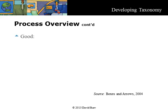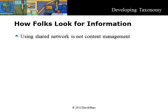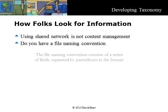Boxes and Arrows also says that most corporate taxonomy development projects begin at the wrong end of the information life cycle. Instead of tackling the problem at its source — content creation — the effort is invested in classifying documents in an existing repository with all its warts. The result is classified mush. Many organizations are drowning in files because they try to use the shared network as a quasi-content management system. You can quickly find out if this is the case by asking if they have a file naming convention. A file naming convention embeds metadata in the file name so you know what it is. If they have a file naming convention, they don't have a content management system — or maybe they do and they still keep the file naming convention. This is very bad practice.